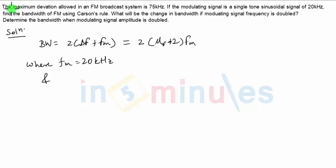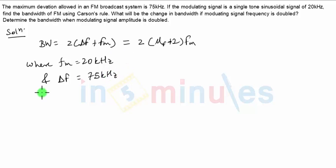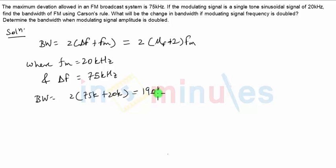In the question it is mentioned that the maximum deviation allowed in an FM broadcast system is 75 kilohertz, so we will consider the same value for Δf as 75 kilohertz. Using these two values, bandwidth = 2(75k + 20k) = 190 kilohertz. That's the bandwidth required in the first case, so we have solved the first part of the question.